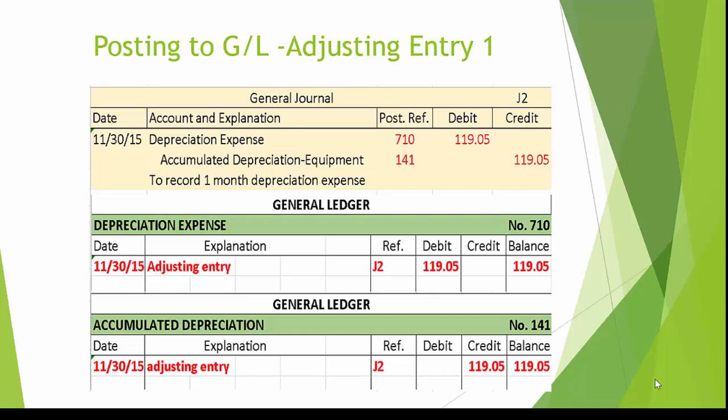Similarly, the credit is entered in the accumulated depreciation account, and the general ledger account after posting is also $1,190.05. In the general ledger, there is a cross-reference J2 in each of the general ledger reference columns that points back to the page in the general journal from which the debit and credit was transferred.